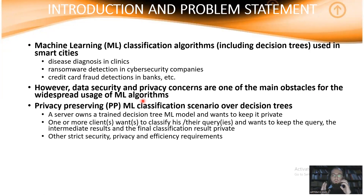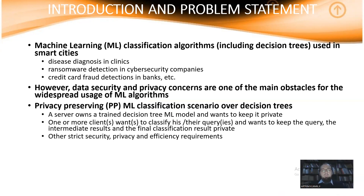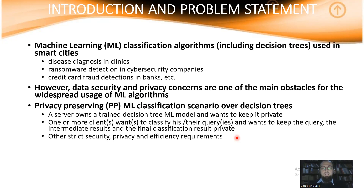Basically, we're dealing with a scenario where a server has an already trained machine learning model — concretely in our case, a decision tree — and one or more clients have unclassified queries that they wish to classify using the server's trained model, in a private and secure fashion. From the server's perspective, the owner of the decision tree wants to keep it private because it's their revenue model, and disclosing it might reveal data related to the dataset on which the model was trained. The client query might contain private and sensitive data such as credit card numbers or private patient health records, so they want to keep it secret on both sides.